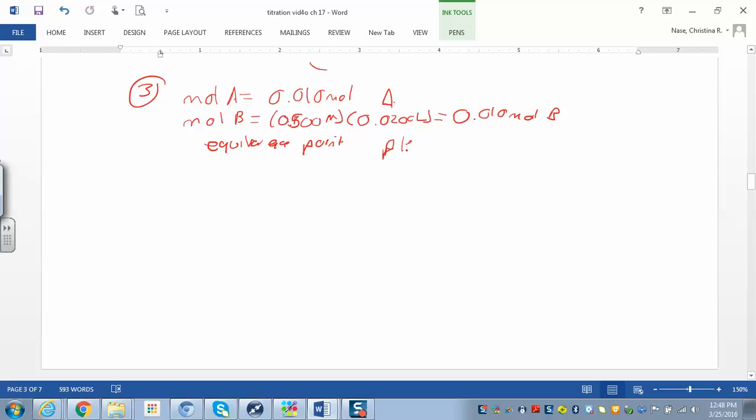pH is equal to 7. You don't even have to show any calculations. The idea is that they totally neutralize each other. And so, you have a neutral solution. All of the moles of the acid neutralize all the moles of the base. You end up with salt and water, sodium chloride and water. And what we learned at the end of chapter 16 was that sodium chloride comes from a strong acid strong base, and so it's a neutral salt. So, it doesn't change the pH at all.